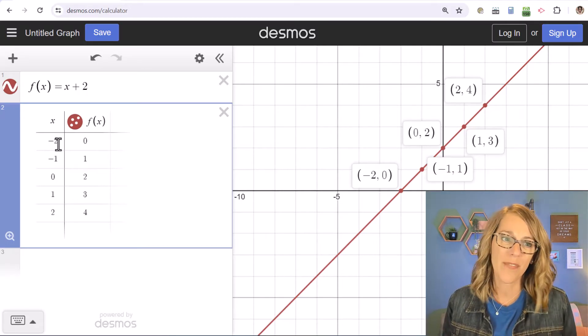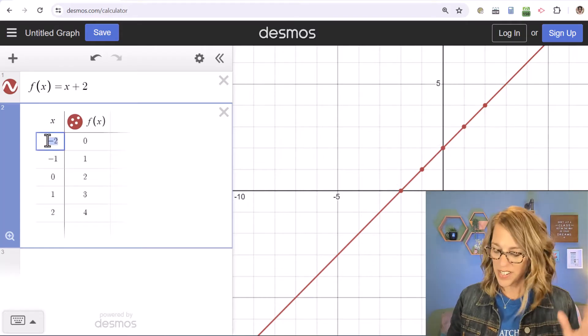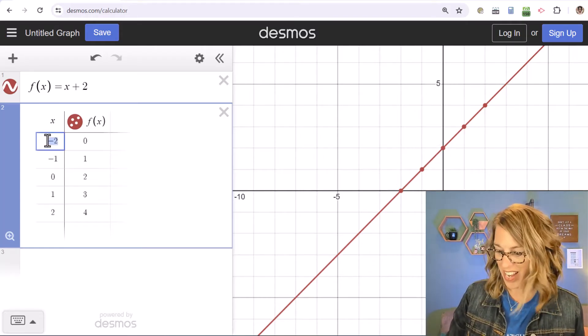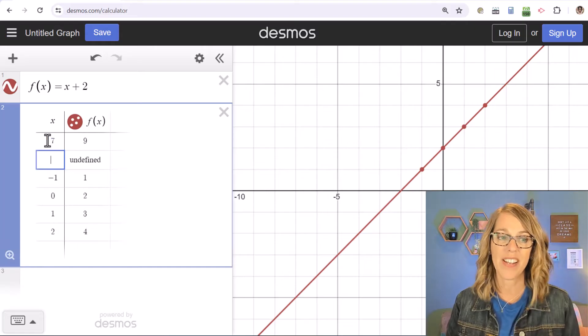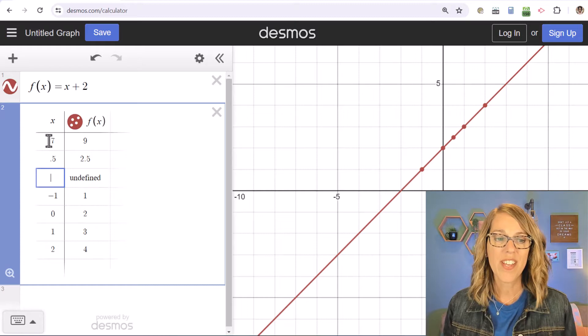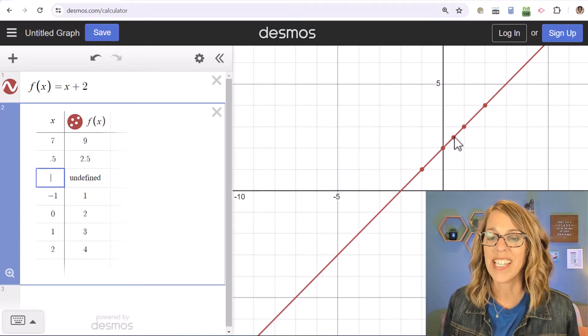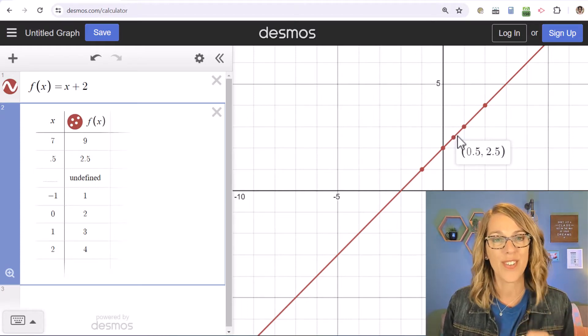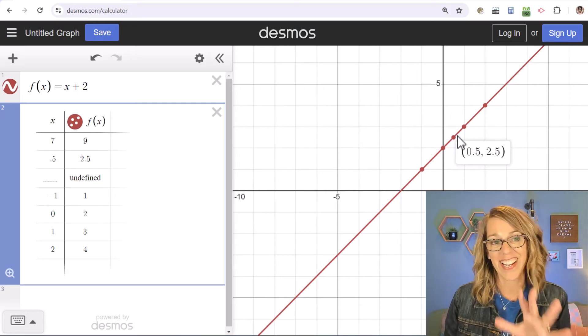So you don't really care about what your function's doing at negative two, but you want to know what your function is doing at say seven. You can type that right in and then it gives you another value. You can even do things like 0.5. Notice how it is giving me those new values on the line as well.